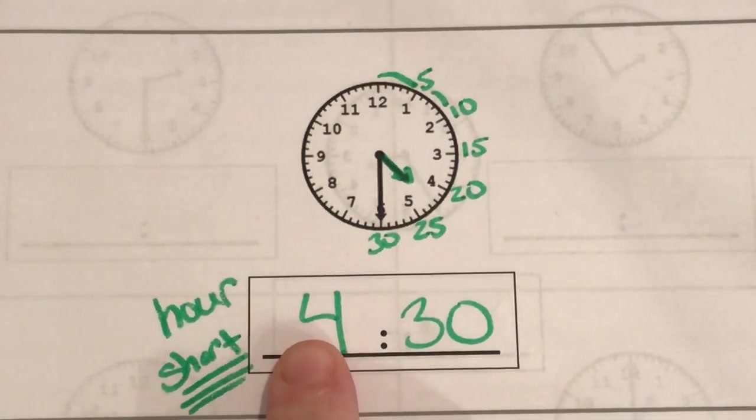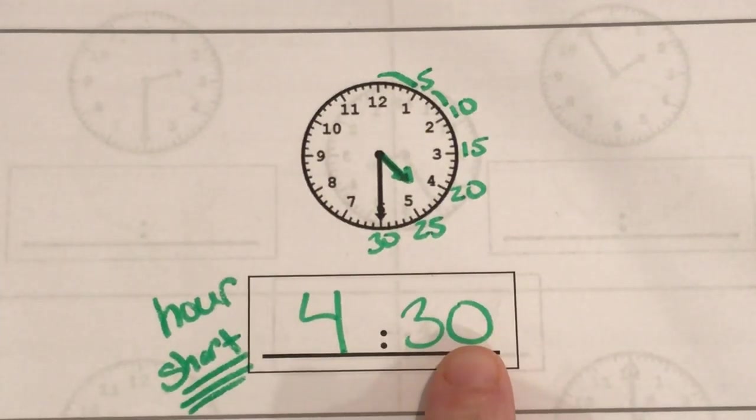So our time is 4:30. So our hour is 4 and our minutes is 30.